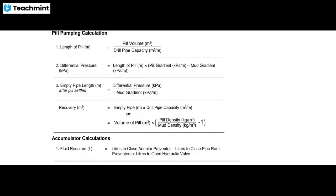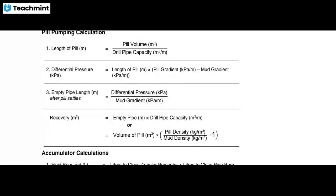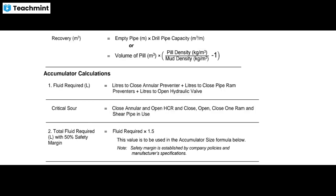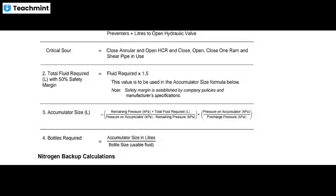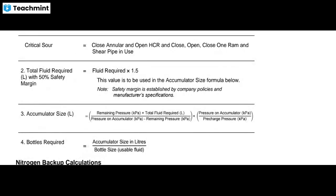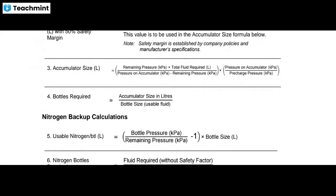For pill pumping calculation: length of pill equals pill volume divided by drill pipe capacity; differential pressure equals length of pill multiplied by pill gradient minus mud gradient. For accumulator calculation: fluid required is shown by formula; total accumulator size L equals remaining pressure in kilopascals multiplied by total fluid, divided by pressure on accumulator minus remaining pressure, multiplied by pressure on accumulator divided by precharge pressure. Number of bottles required equals accumulator size in liters divided by bottle size.